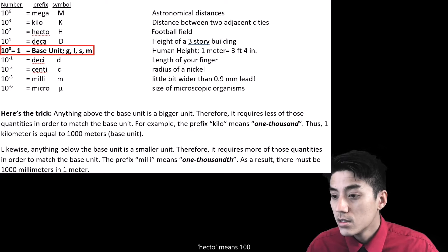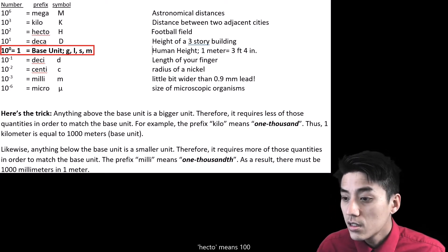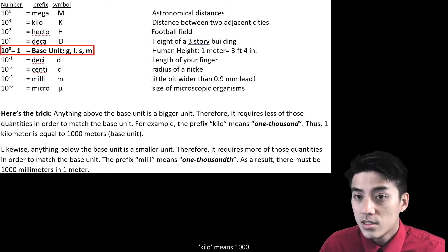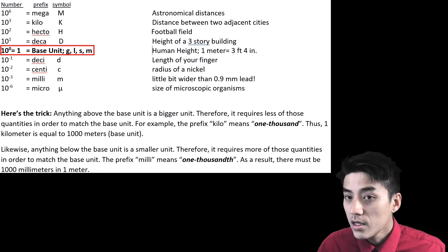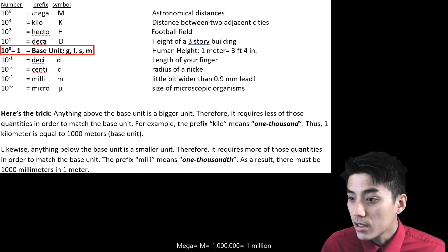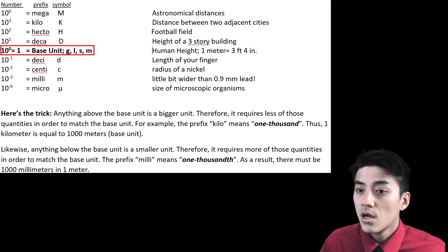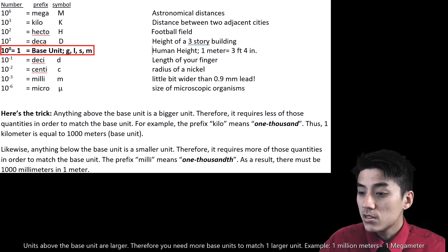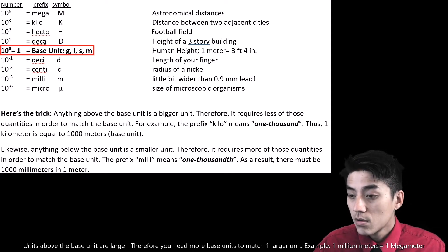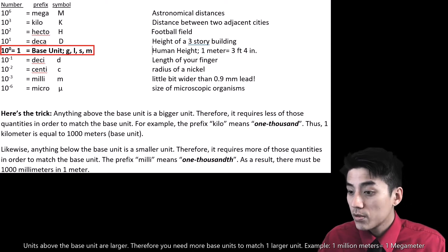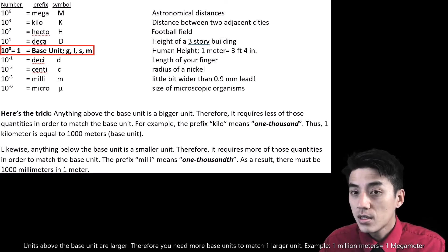Hecto means 100, 10 to the 2nd, and the symbol for that is H. Kilo means 1,000, 10 to the 3rd, and the symbol is capital K. Mega just means 1,000,000. So a megameter is a million times larger than a meter. Because you're above the base unit, these units are larger, which means you need more of the base units to match just one of the big units above it. For example, you need 1,000,000 meters to match 1 megameter.